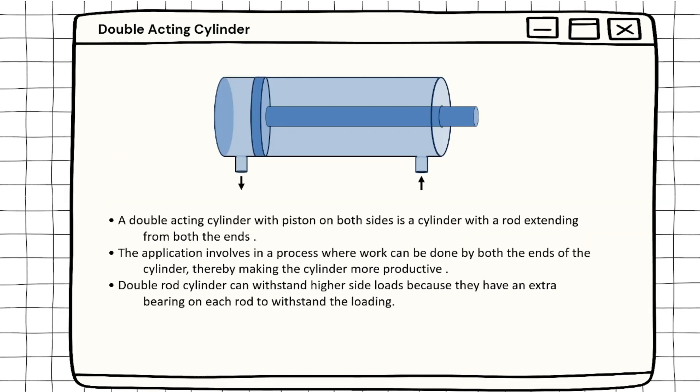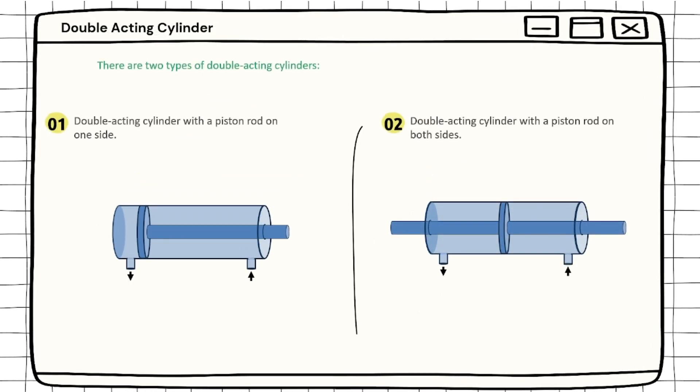Going with the double acting cylinder: a double acting cylinder with a piston rod extending from both ends is a cylinder where work can be done by both ends, making the cylinder more productive. Double acting cylinders can withstand higher side load because they have an extra bearing on each rod. It is divided into two types: number one, double acting cylinder with a piston rod on one side, and number two, double acting cylinder with a piston rod on both sides.